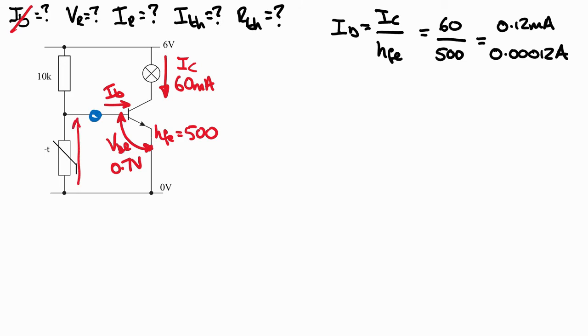...has to have been dropped across the thermistor. As a result, the voltage dropped across the 10k resistor has to be the voltage supply VCC take away the VBE voltage, which means 6 volts take away 0.7 equals 5.3 volts, which means we've established this voltage as 5.3 volts.